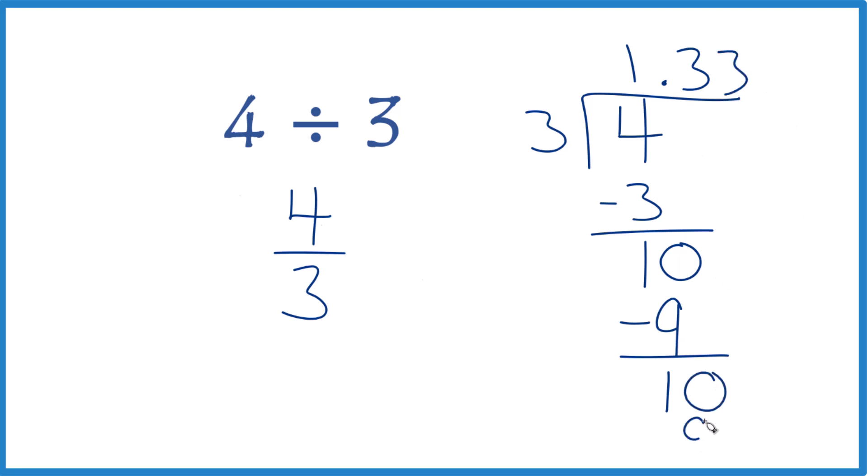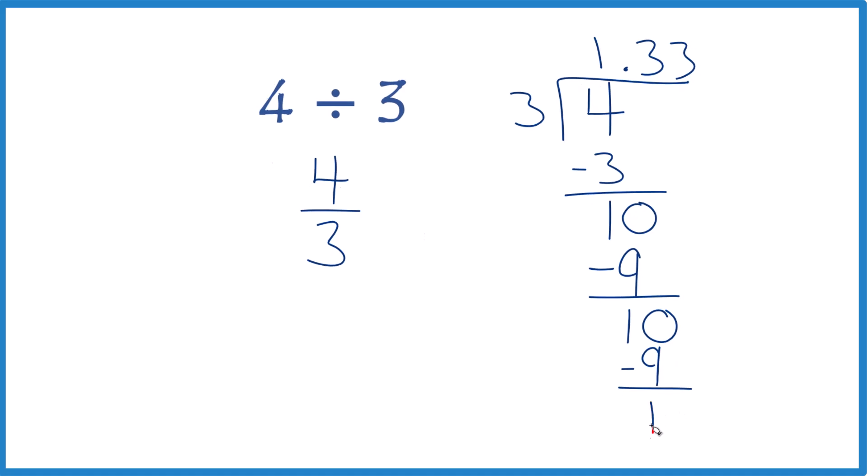3 times 3 is 9. Subtract, we get 1. Move over 1, call it 10. So 3 times 3 is 9.